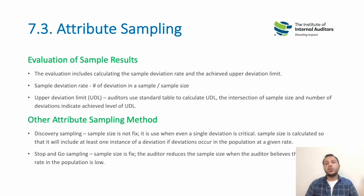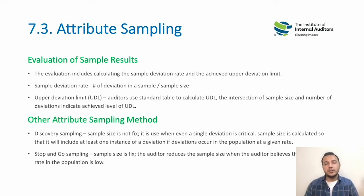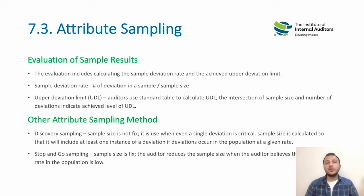The other method is stop-and-go sampling, in which the sample size is also not fixed. The auditor reduces the sample size if the deviation is within acceptable limits, or increases the sample size if the deviation is not within acceptable limits — in order to understand the full extent and gravity of the issue.